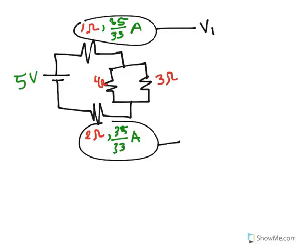So let's say V1 for the 1 ohm resistor is going to be the current, 35 over 33, times the resistance 1, so it's just going to be 35 over 33 volts.